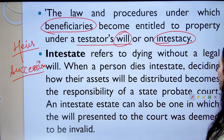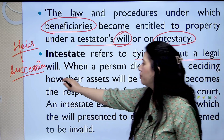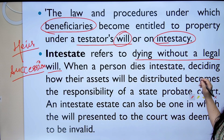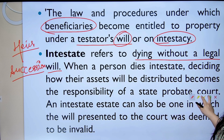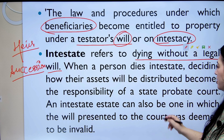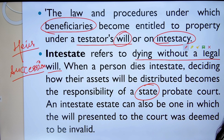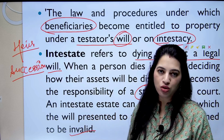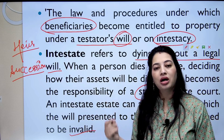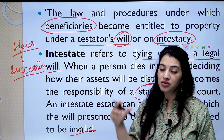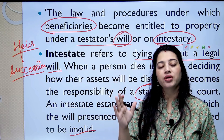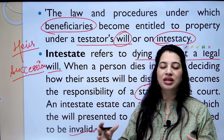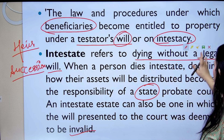Intestacy refers to dying without a legal will. When a person dies intestate, deciding how their assets will be distributed becomes the responsibility of a court — probate court. An intestate state can also be one in which the will presented to the court was deemed to be invalid. Agar invalid will hai, tab bhi court of law hi decide karega that who all are going to be the heirs, the legal representatives, or the beneficiaries, what part is going to get allotted to each one, and how will that division continue — this is what is meant by succession.